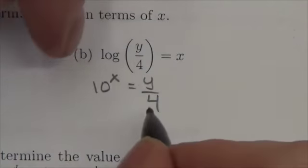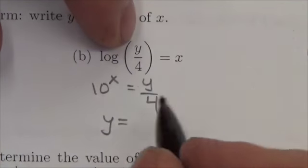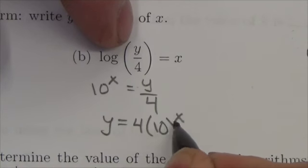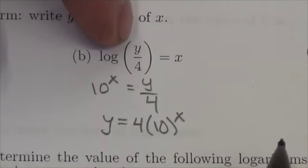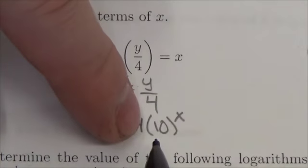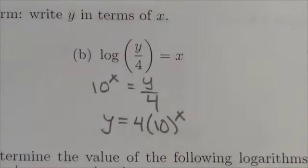Now to get the y by itself, I'll write the y here. I'm gonna multiply across by 4, so this will be 4 times... now notice this does not become 40 to the x, it's 4 times 10 to the x. In order to evaluate anything here, I would have to evaluate the power first, then by the coefficient, so that's as simple as that's going to get.